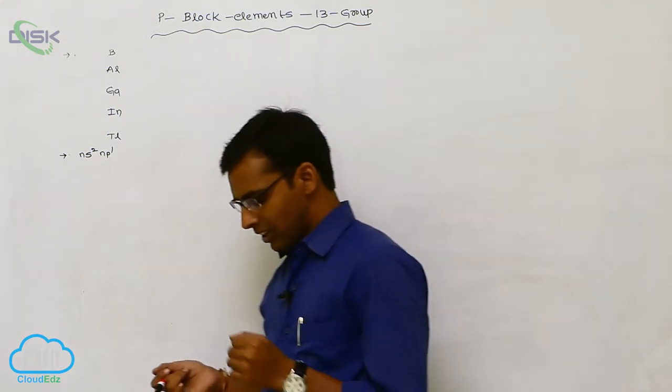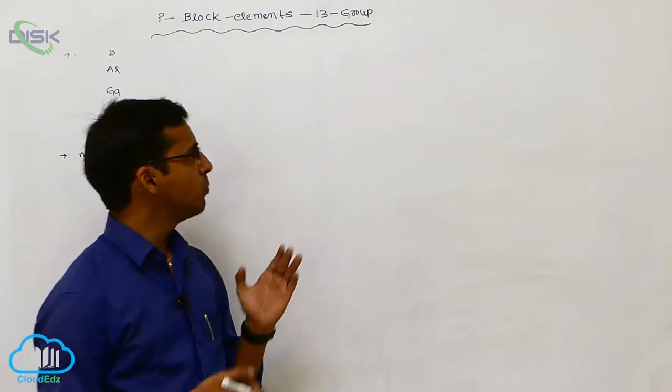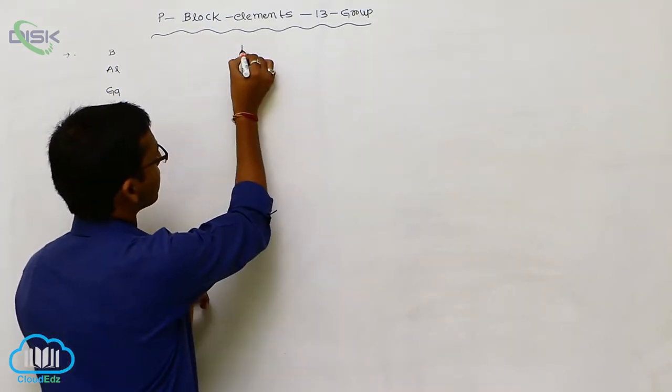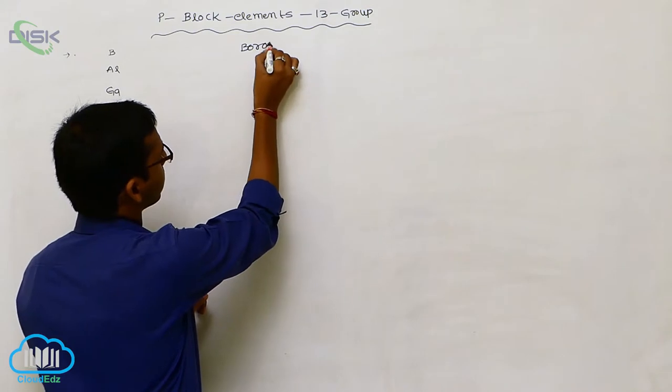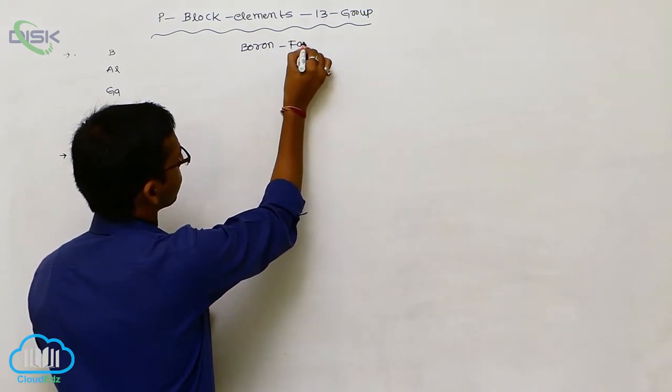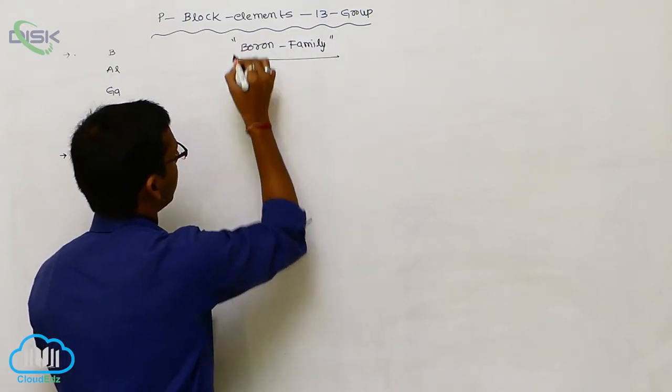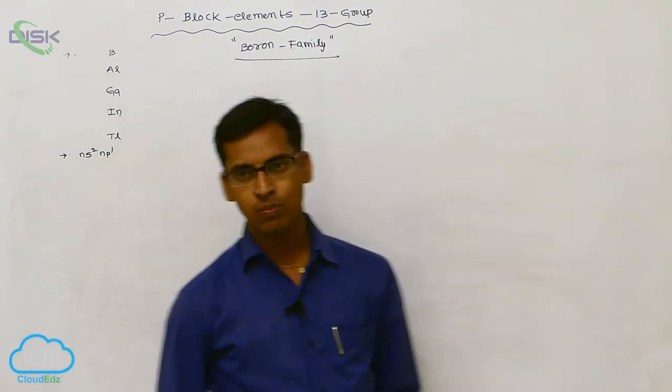And next one. These 13th A group elements, boron. So the 13th A group elements are also called as boron family. This is called as boron family because it starts from boron. That is what it is called as boron family.